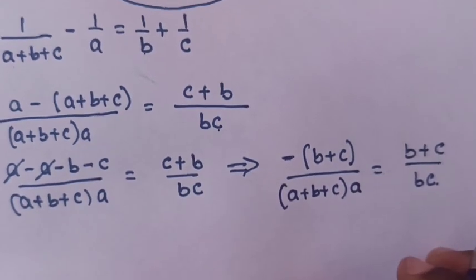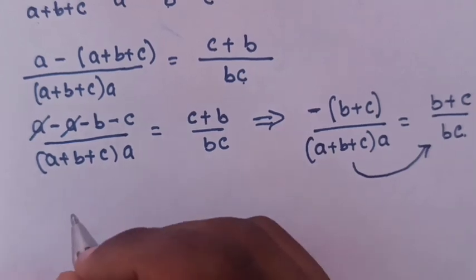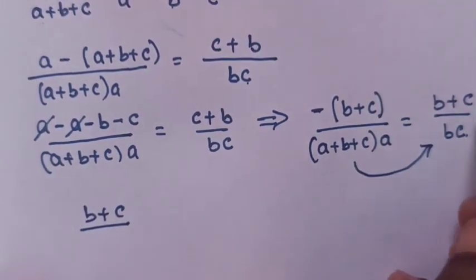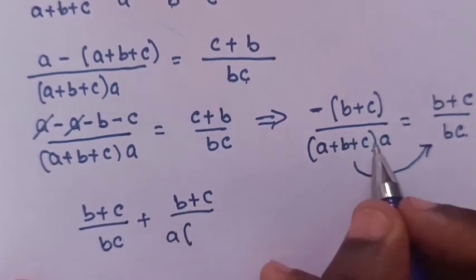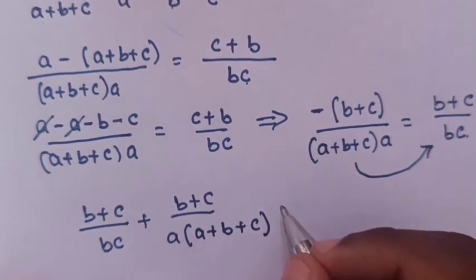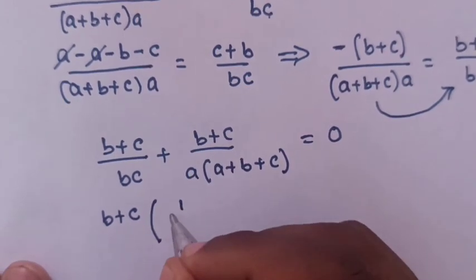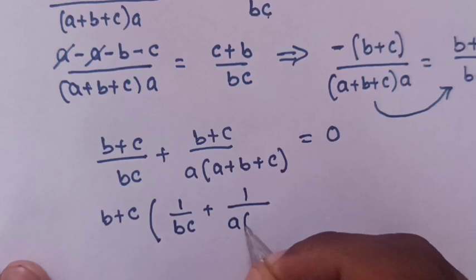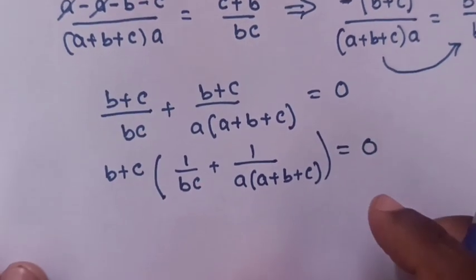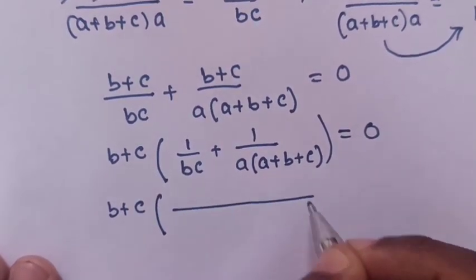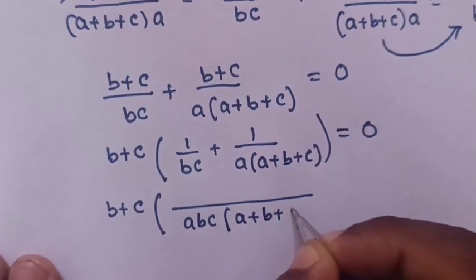Moving the negative term from the left side to the right side, our equation becomes (B plus C) over BC plus (B plus C) over A(A plus B plus C) equals 0. Factoring out (B plus C), we get (B plus C) times [1 over BC plus 1 over A(A plus B plus C)] equals 0. Finding the common denominator, which is ABC(A plus B plus C).